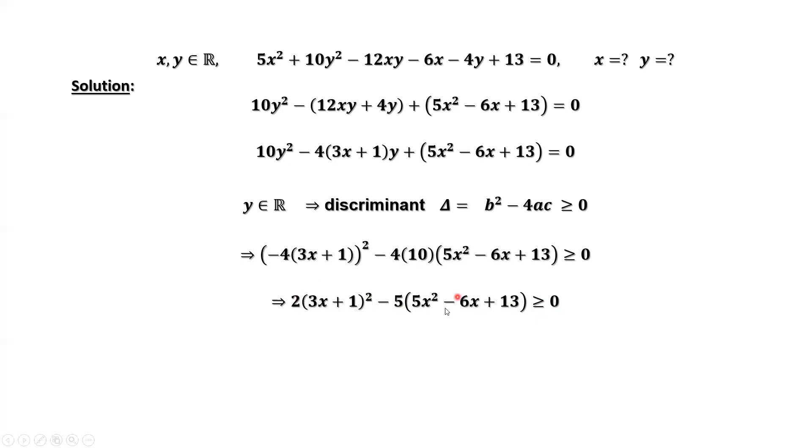Continue to simplify the left-hand side of this inequality. We have -7x² + 42x - 63 ≥ 0.